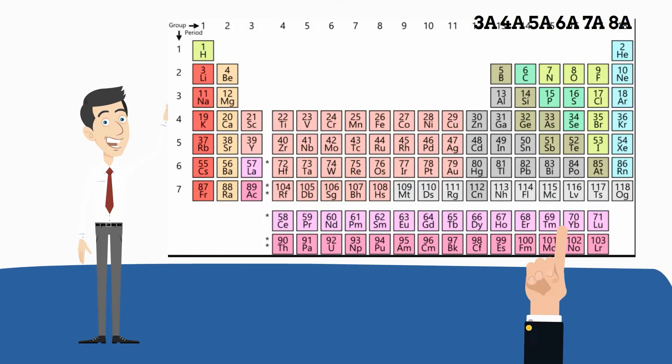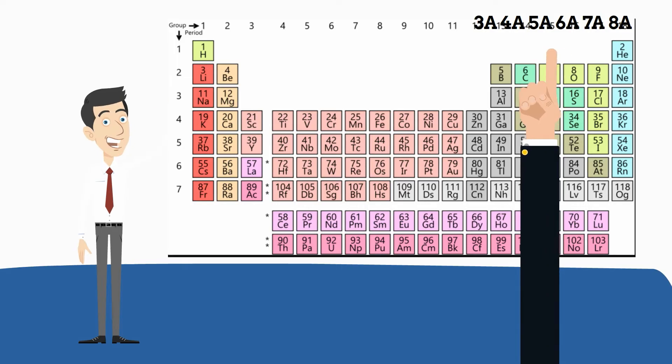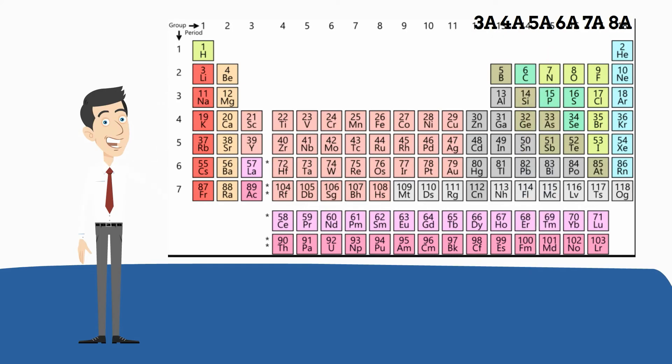Well, this is why you may see on a periodic table groups 13 through 18 written as 3a, 4a, 5a, etc.